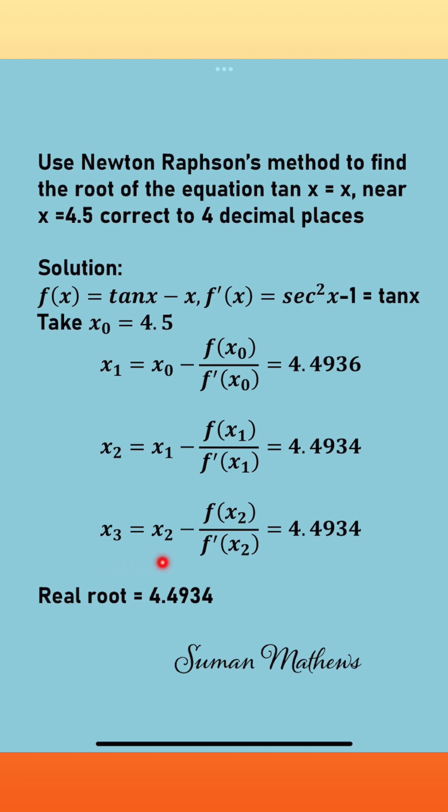For the third iteration, x₃ equals x₂ minus f(x₂) by f'(x₂). Substituting this value of x₂, you get x₃ as 4.4934.